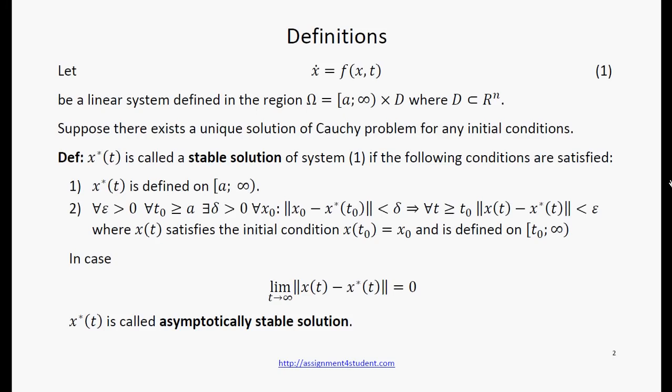X star of t is defined on this region. Small delta perturbation of initial conditions leads to small perturbation of the solution of problem 1.